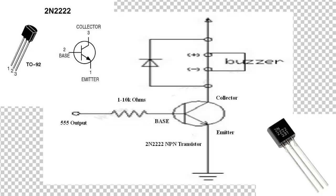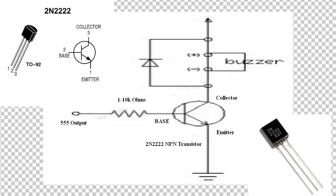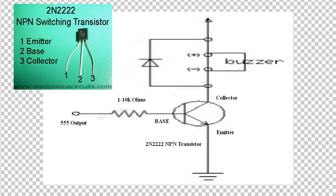So if we look at the buzzer circuit, we can use the buzzer circuit. But I prefer the 2N2222 — it's very comfortable and convenient. This is the emitter-base-collector configuration, and you can use the pin diagram.